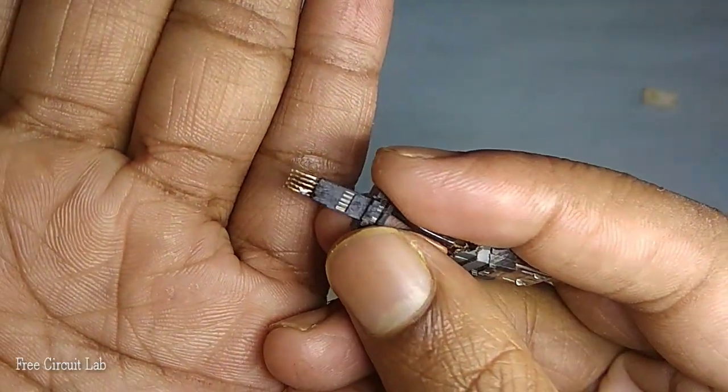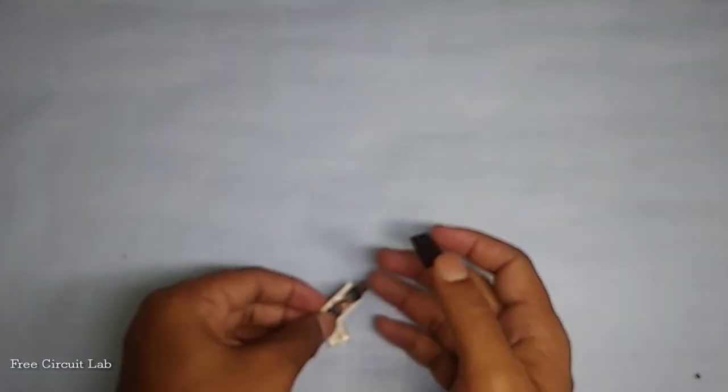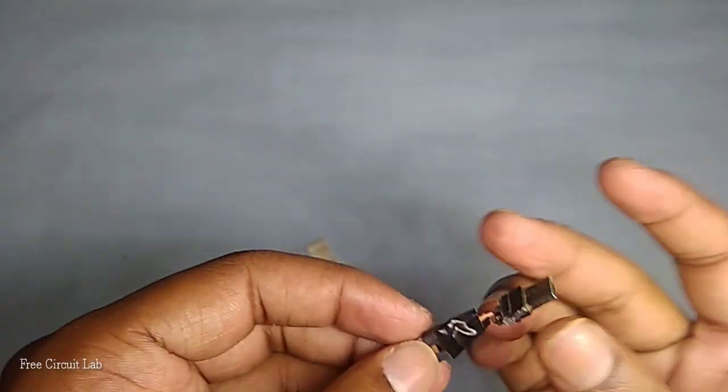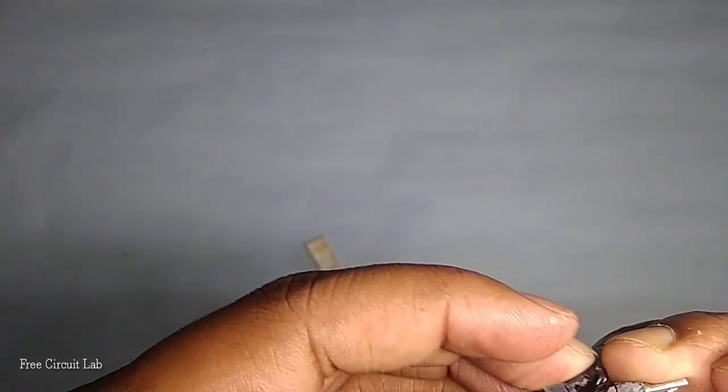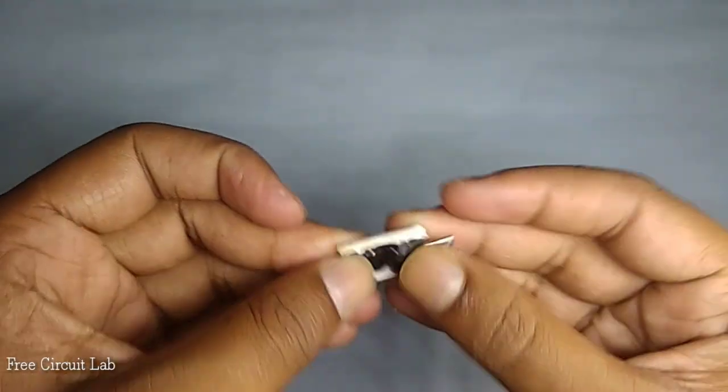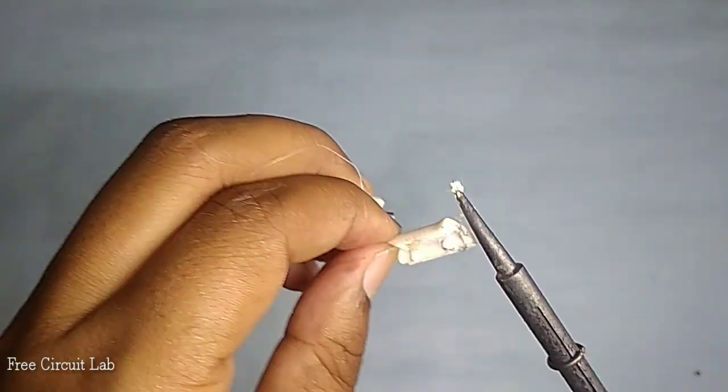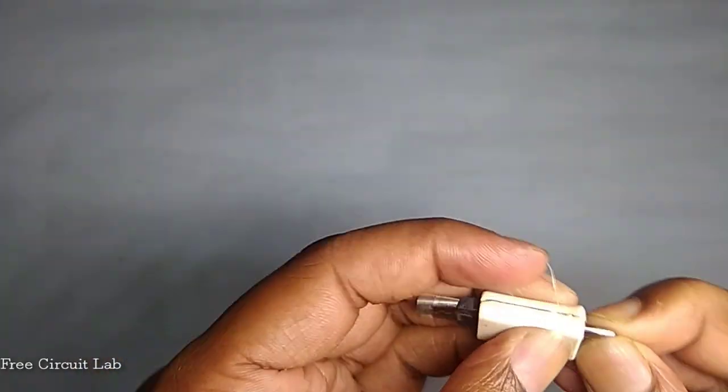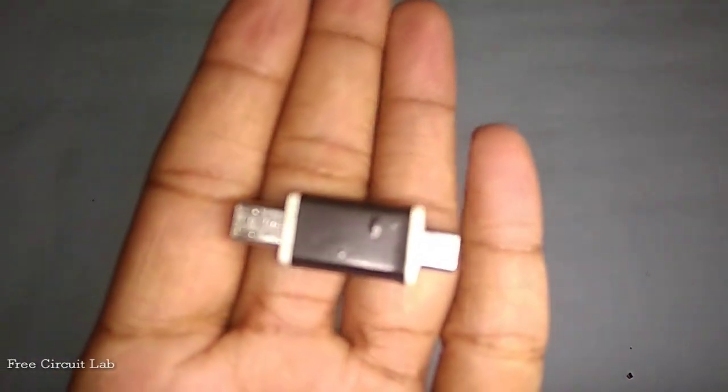Now our connections are complete. To avoid short circuit, I am adding some tape. And it's time to cover it with the housing. If it's not fitting correctly, we have to adjust it with soldering iron. And finally, our connector is complete.